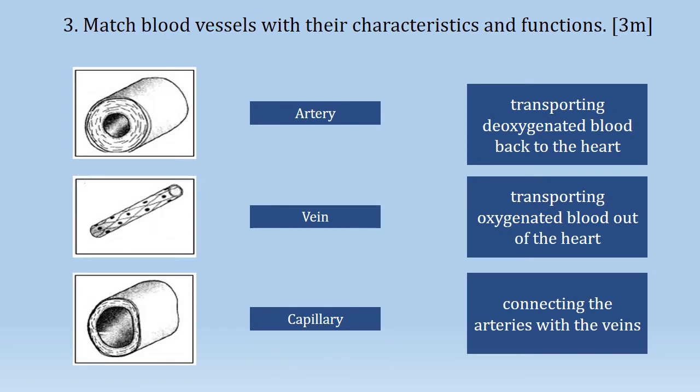Question 3: match blood vessels with their characteristics and functions, three marks. The lumen is the center space of a vessel. The artery has a small lumen, so match the first diagram as an artery. The vein has a large lumen, then match the third diagram as a vein. The capillary has the smallest lumen, as thick as one cell, so match it accordingly.